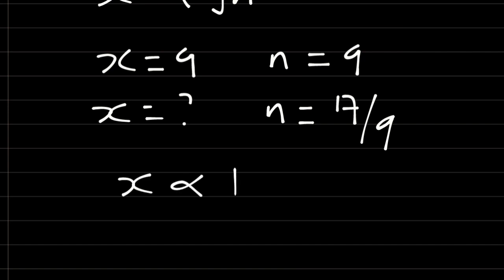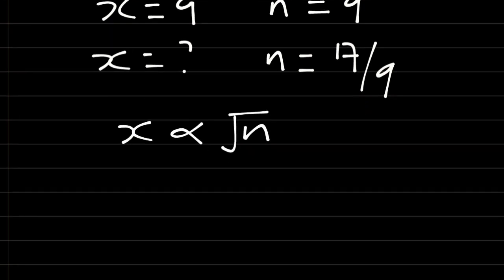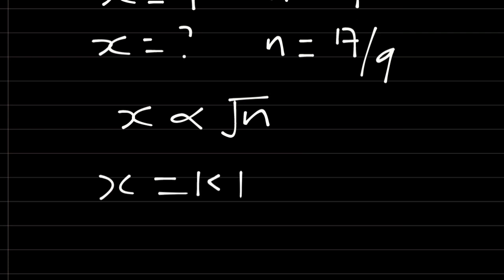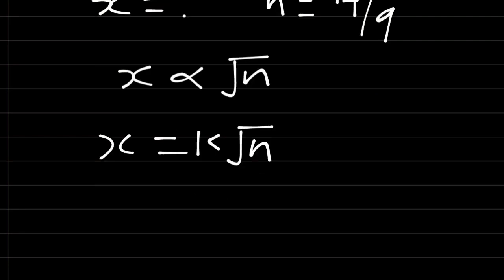From this we have x is directly proportional to square root of n. We can say that x is equal to k square root of n, where k is a constant.